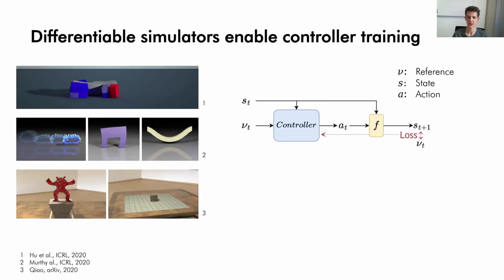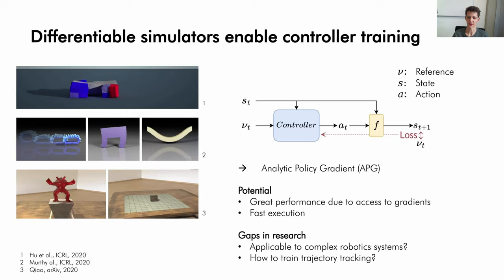Training a policy in such a way is called analytic policy gradient. Since a neural network is trained, execution at deployment time is fast as well. However, the papers don't outline or address common pitfalls of the method and the question remains if it's applicable to robots and how to avoid the pitfalls when training a trajectory tracking policy.